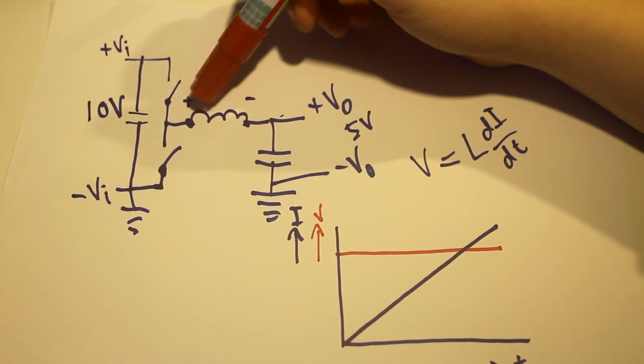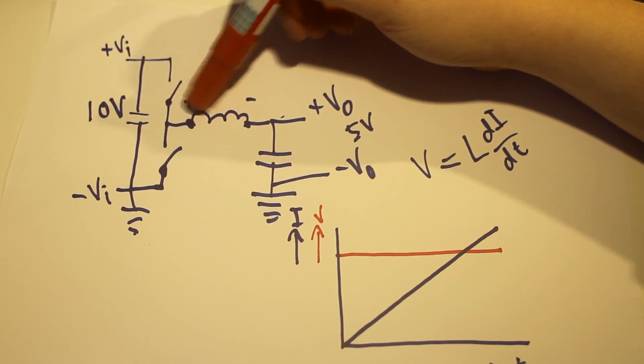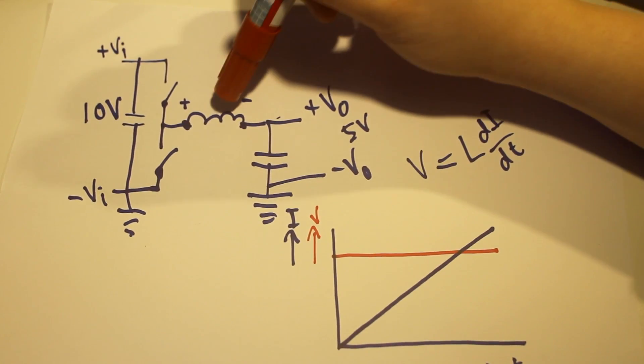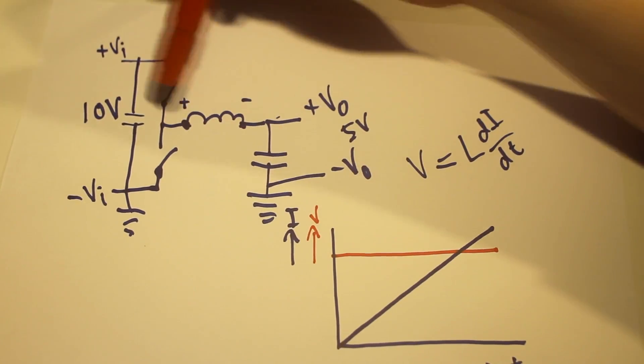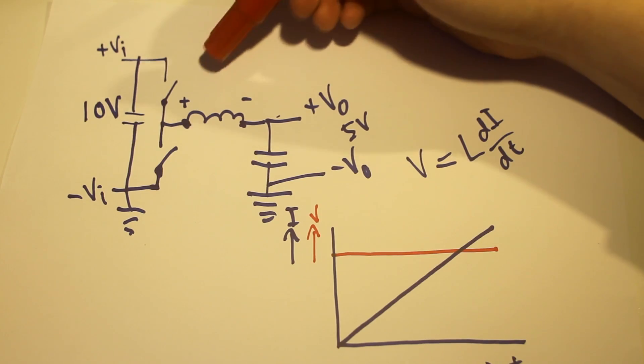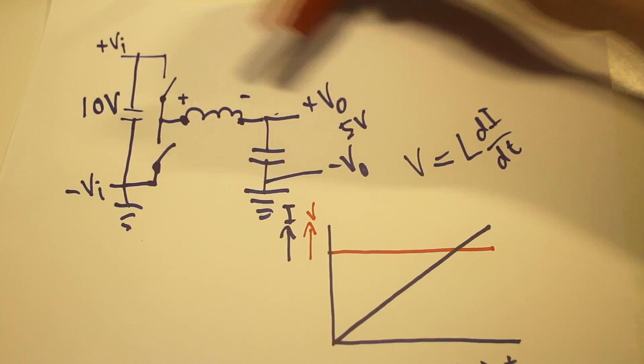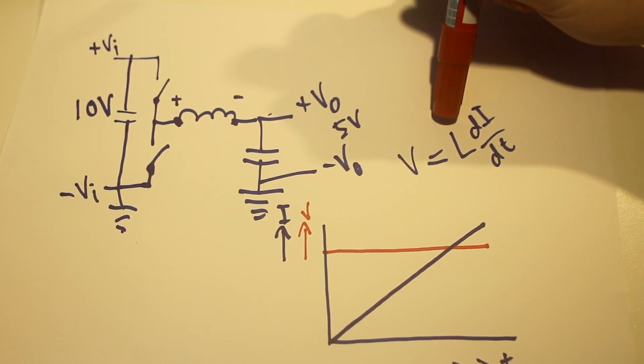But now we have a problem. Because there is current going through this inductor. And that is suddenly stopped. Because we open the switch, there is no more current path. This side is open. And what this means is that according to this equation, di dt, the change in current over time.